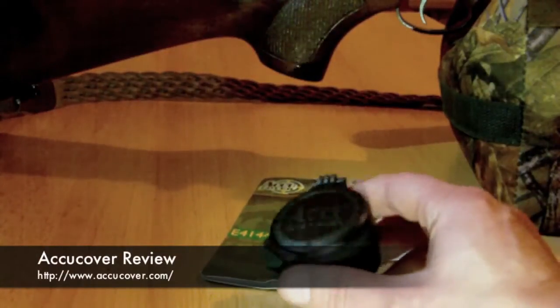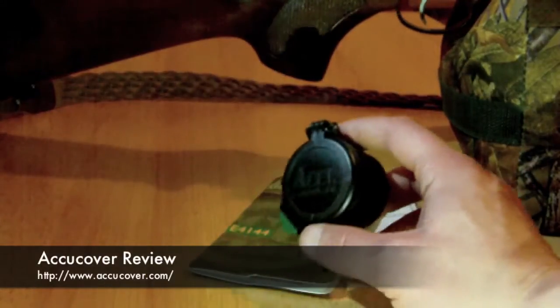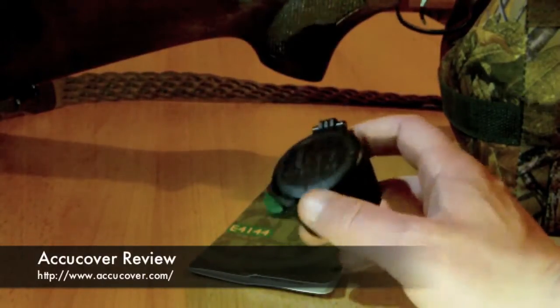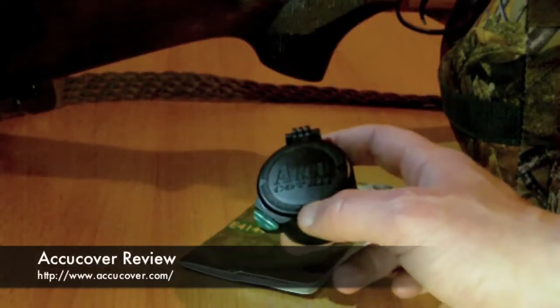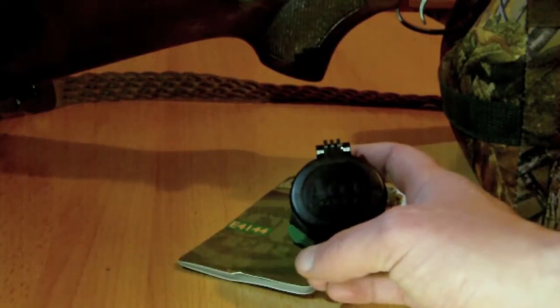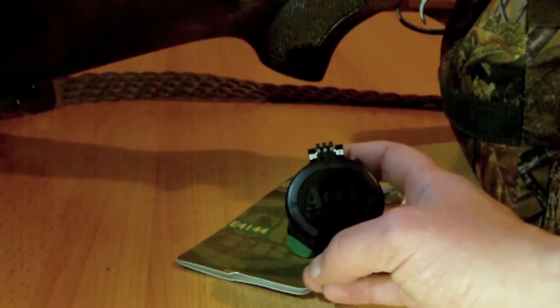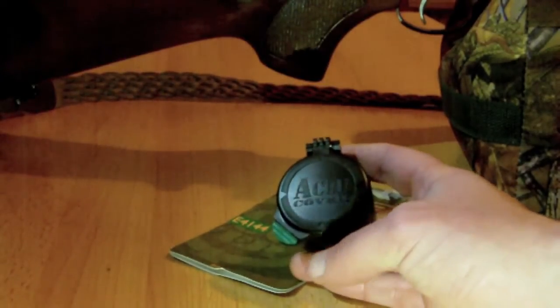Hi there guys. I thought I'd do a little review today. I recently got through the post an AccuCover lens cap. Sorry about the poor light. I'm trying to light things as best I can with a couple of torches, but that's all these energy saving bulbs. They're not really that great are they?